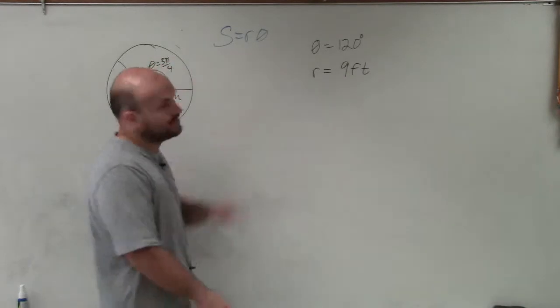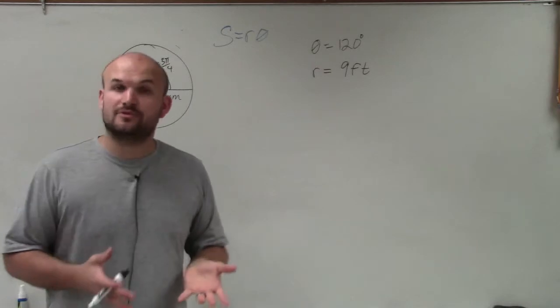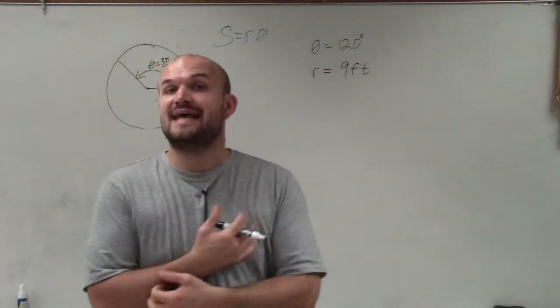The formula that we're going to use is S equals R times theta, where S represents the arc length which we are trying to find, R represents the radius which we are given in both problems, and theta represents the angle in radians.